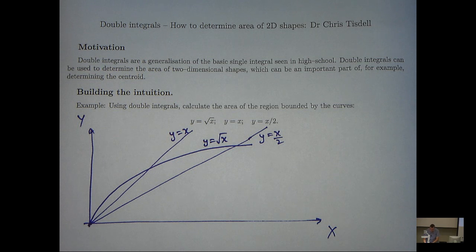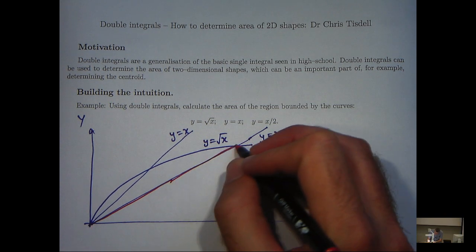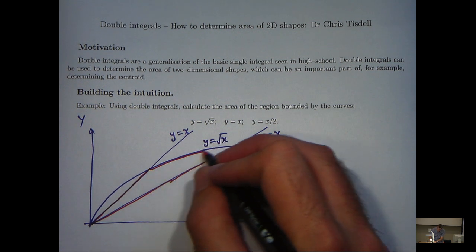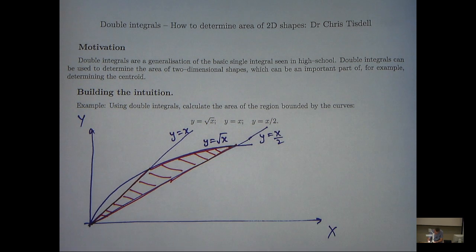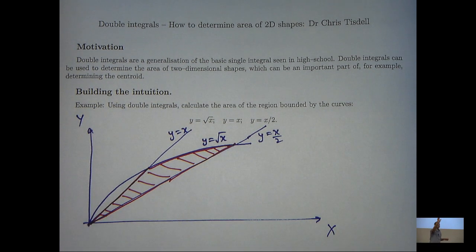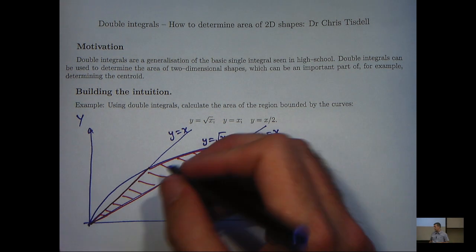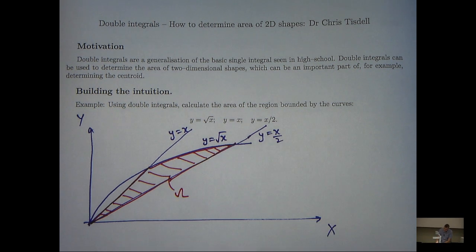So let's look at the region then bounded by these three curves. Well, if I look at the region that's enclosed by these three curves, that will be the region whose area we wish to calculate. So I'm going to denote this region by omega.